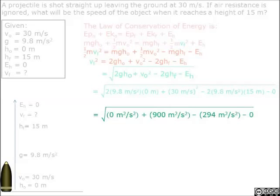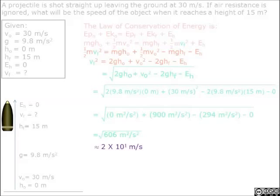So after computing this, we should come up with an answer of 2 times 10 to the power of 1 meters per second. Notice that it's to 1 sig fig because the lowest sig fig here is 1 sig fig from 30 meters per second.